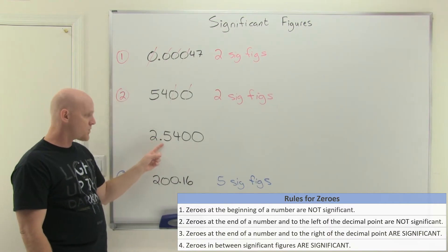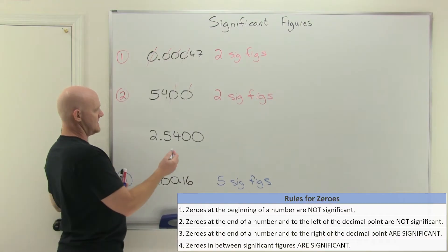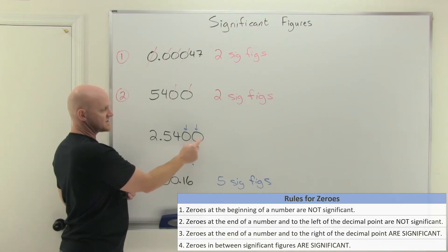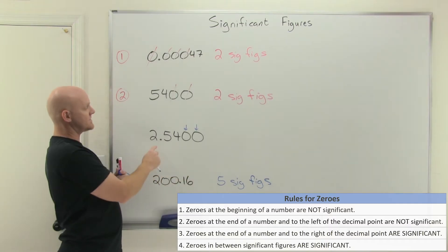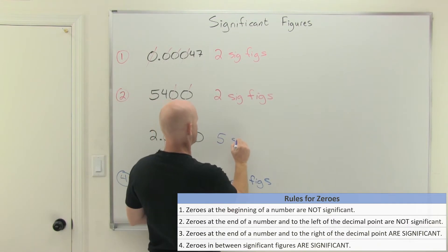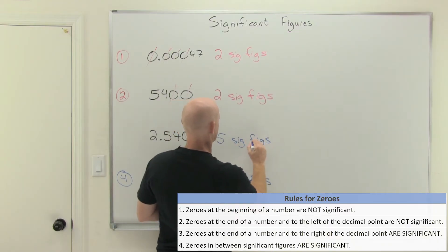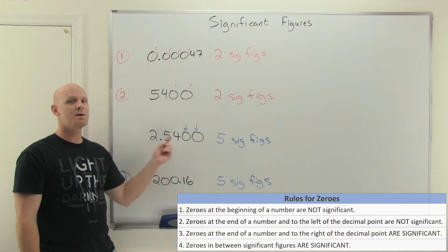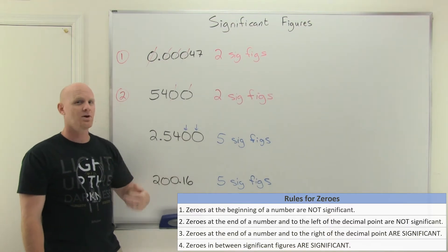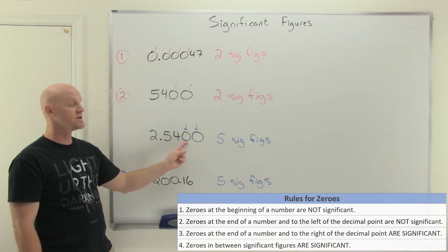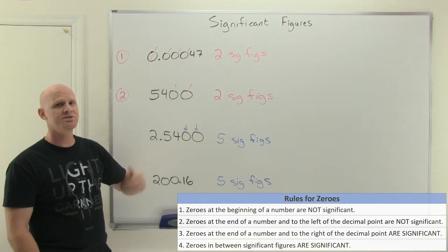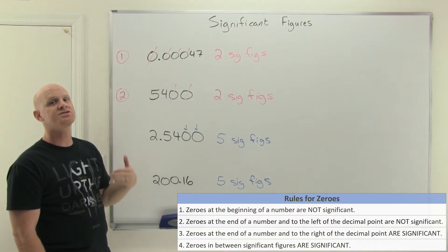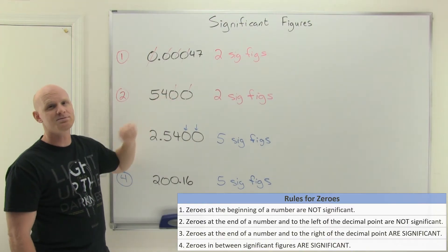Rule number three: if a number ends in zeros to the right-hand side of the decimal — like 2.5400 — those zeros are totally significant. The last zero ends the number, so it's significant, and the zero before it is sandwiched between significant figures, making it significant too. So the 2, the 5, the 4, and both zeros are all significant — five sig figs total. We know this number specifically to the ten-thousandths place. In summary: zeros at the beginning are never significant; zeros in the middle are always significant; zeros at the end are significant if they're right of the decimal, and not significant if they're left of the decimal.